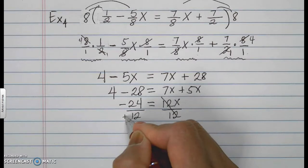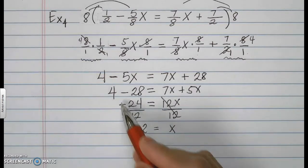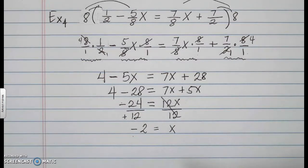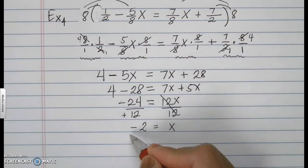X is a negative 2. Why negative? Because negative over positive or positive over negative is negative. And 24 divided by 12 is 2.